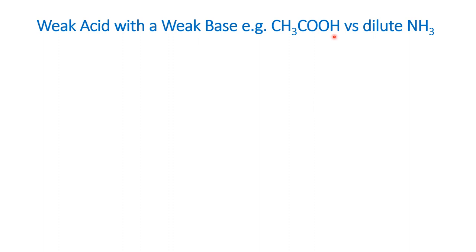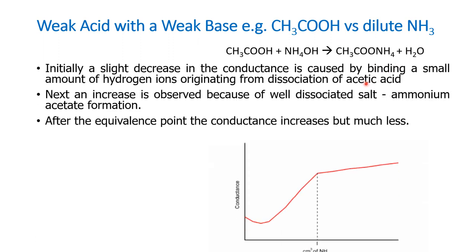Next is weak acid versus a weak base. As before, acetic acid has very low conductance, starting well below on the y-axis. As ammonium hydroxide neutralizes acetic acid, ammonium acetate is formed, causing an increase in conductance due to the ionic species. After the equivalence point, there is excess ammonium hydroxide — which is also poorly dissociated — so the conductance remains nearly the same, giving a nearly flat line with excess ammonium hydroxide.